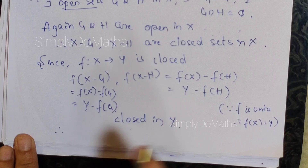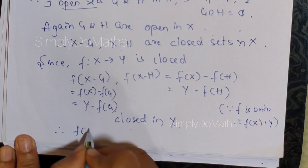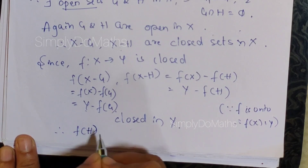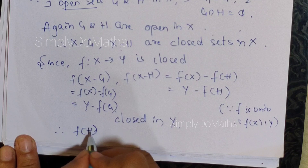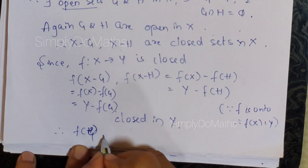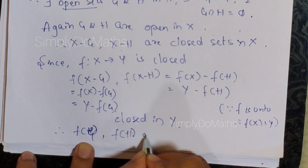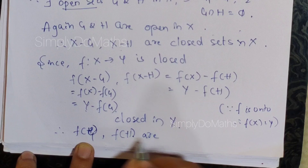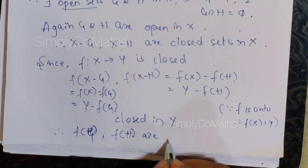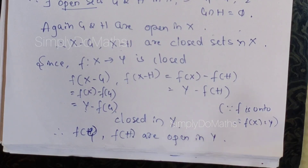Since X minus G and X minus H are closed in X, and f is a closed function, f(X minus G) and f(X minus H) are closed in Y. Therefore Y minus f(G) is closed in Y, which implies f(G) is open in Y. Similarly, f(H) is also open in Y. So f(G) and f(H) are open sets in Y.